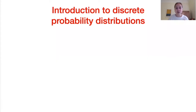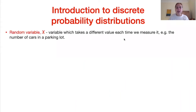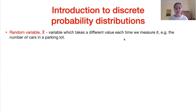First of all, a little introduction to discrete probability distributions — let's start off with some definitions. A random variable X is a variable which takes a different value every time we measure it. In the discrete case, remember discrete is counting things, whereas continuous is things we can measure. For discrete distributions, a random variable could be something like the number of cars in a parking lot or the number of fish in a pond.